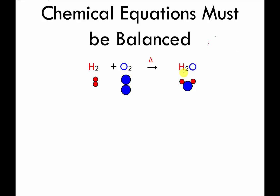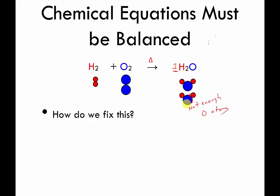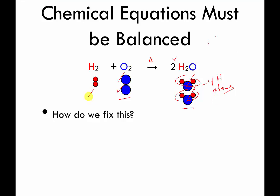Right now the equation is not balanced - not enough O atoms on the right. But I only get to change the amounts, specifically the number in front of the formulas. The only way to fix it is by doubling the amount of water. So if I change that 1 to a 2, then the oxygens are balanced: I started with 2 oxygens and ended with 2 oxygens. But we fixed one problem and made a new one - we now have 4 H atoms on the right but only 2 H atoms on the left. So we unbalanced the H's.